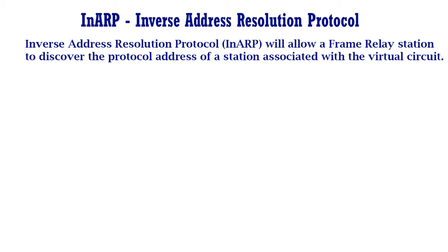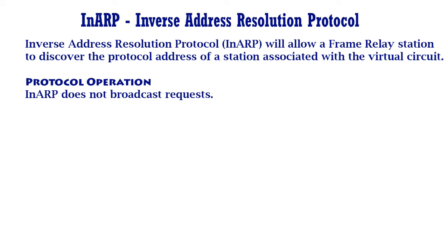Inverse Address Resolution Protocol, i.e., InARP, will allow a frame relay station to discover the protocol address of a station associated with the virtual circuit. It is more efficient than sending ARP messages on every VC for every address the system wants to resolve, and it is more flexible than relying on static configuration.